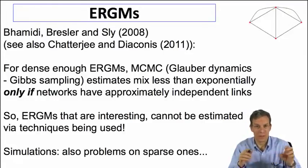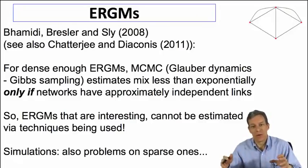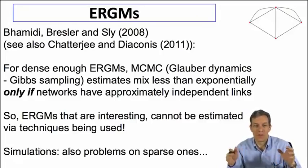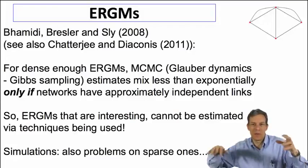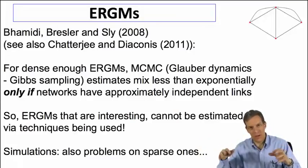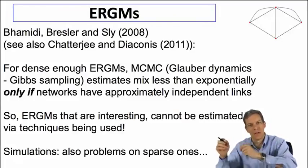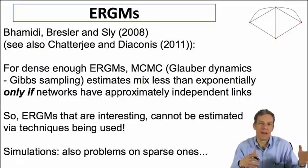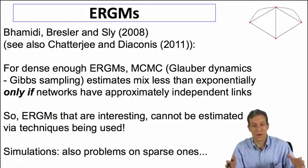When you look at those kinds of techniques, they will only end up converging to give you an accurate estimate, so they will mix in less than exponential time, only if the networks are approximately independent. So the situations in which marching randomly through this space of networks is actually going to give you a good picture of what's going on is a case where the links were actually formed independently at random, and now we're back into a world that we could estimate just by using straight analyses on the node-by-node level as opposed to actually looking at the network itself.